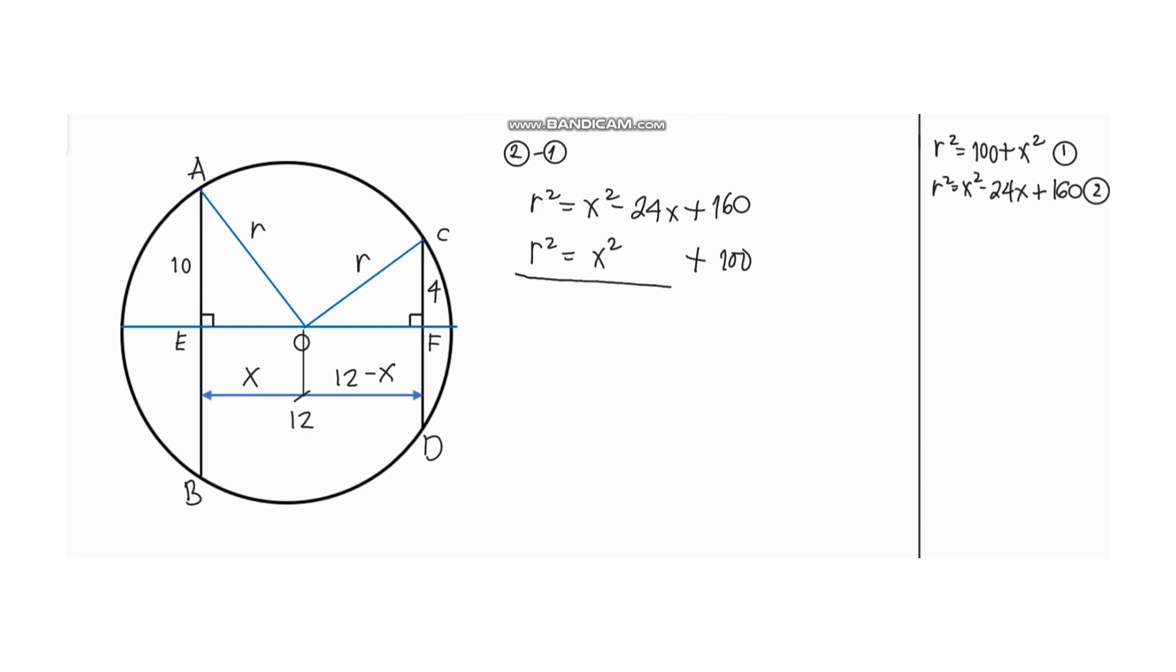If we try to subtract, we have R squared minus R squared, this cancels out to 0, and X squared minus X squared cancels out also. And negative 24X minus 0 will be negative 24X, and 160 minus 100 equals 60.